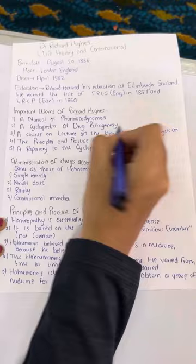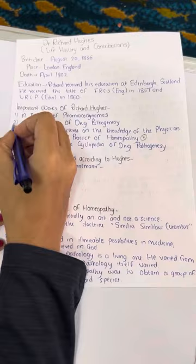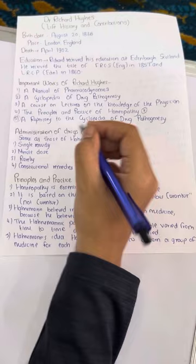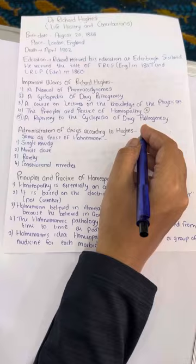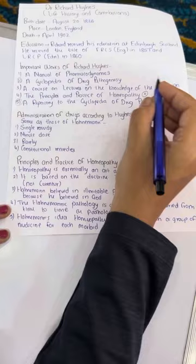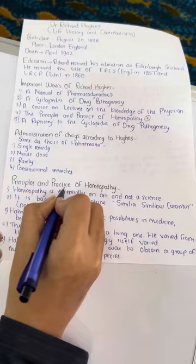Additionally, The Repertory of the Cyclopedia of Drug Pathogenesis. So these were the important works: Pharmacodynamics, Drug Pathogenesis, Knowledge of the Physician, Principles and Practice of Homeopathy, and a Repertory of the Cyclopedia of Drug Pathogenesis. The repertory was similar to that of Dr. Hahnemann — single remedy for the patient, minute dose, given rarely, and constitutional remedies. Now let's understand a few important points about the book Principles and Practice of Homeopathy.